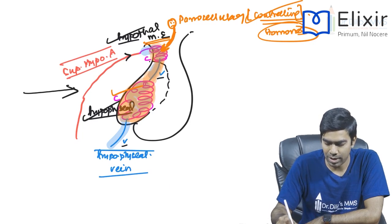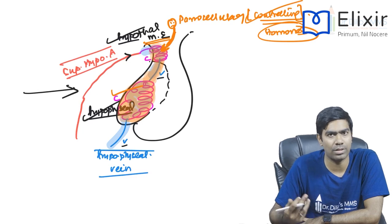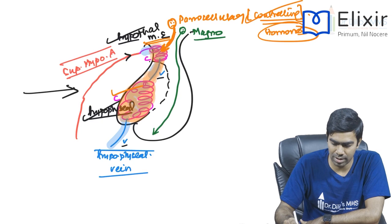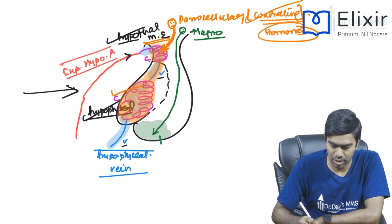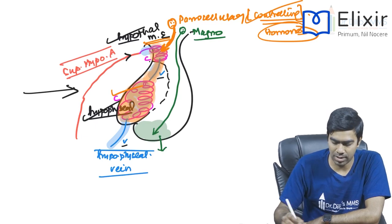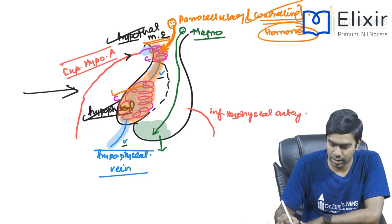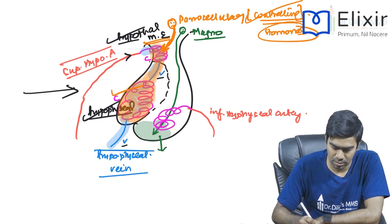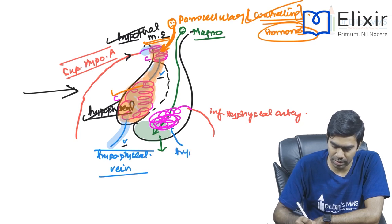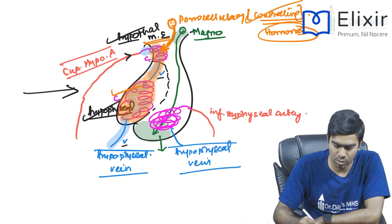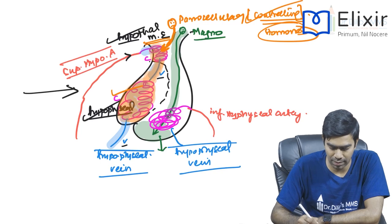In contrast, the posterior pituitary doesn't need a portal system because the magnocellular neurons directly reach the posterior pituitary, where hormones are stored and released into the veins. The posterior pituitary is supplied by the inferior hypophysial artery, which forms a capillary plexus and ultimately drains into the hypophysial vein. There is no portal system needed here at all.